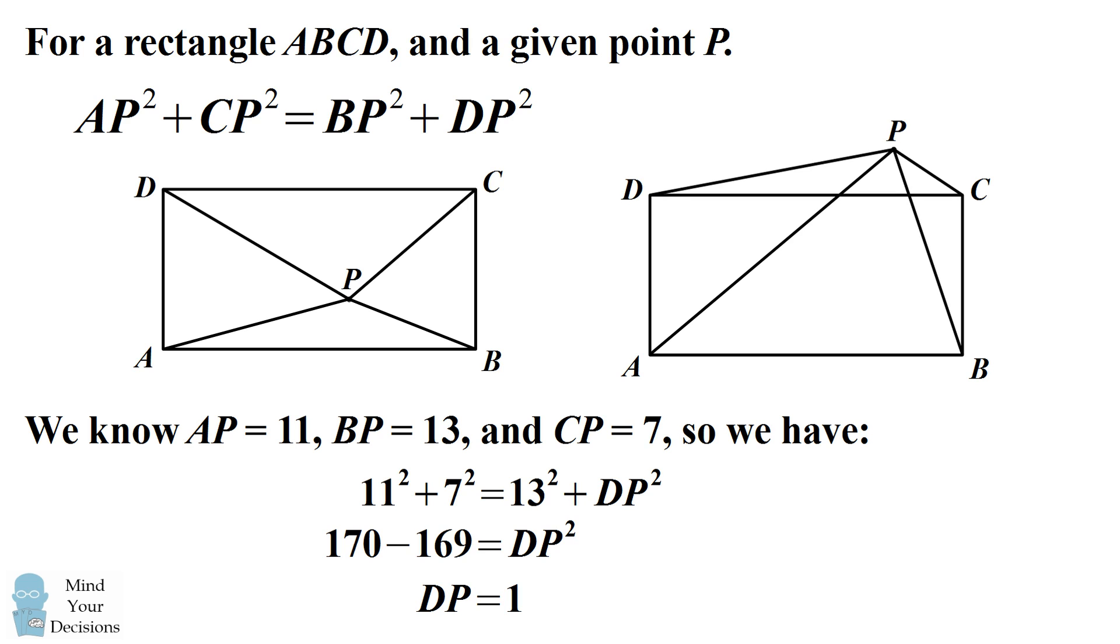And we don't know anything about the rectangle like its length and width. We can still figure out the distance from P to the fourth corner of the rectangle.